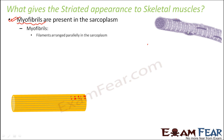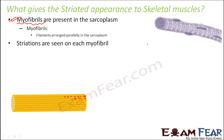These striations are due to the presence of myofibrils — extremely thin filaments arranged parallelly in the sarcoplasm. Striations are seen on each myofibril. On all these myofibrils, you have alternate dark and light regions, represented by dots for the dark regions and the remaining portion as light regions.